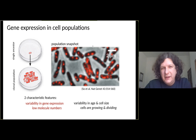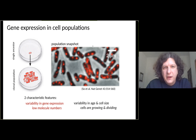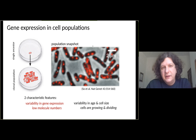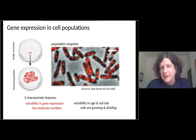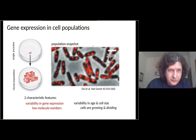There's also another type of variability apparent from the cell outlines: variability in cell age and cell size. For example, some cells have just divided - you can see the septum and the cells partitioning molecules between the two daughters. Other cells are just about to divide, with everything in between. So there's huge variability not only in molecule expression but also in cell age and cell size.